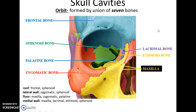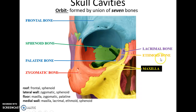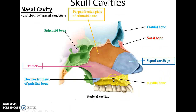The orbits are formed by the union of seven bones. The roof of the orbit is made up of the frontal bone and part of the sphenoid bone. The lateral wall is made up primarily of the zygomatic bone and a little bit of the sphenoid bone. The floor is made up of the zygomatic bone, the maxilla bone, and a tiny bit of the palatine bone.